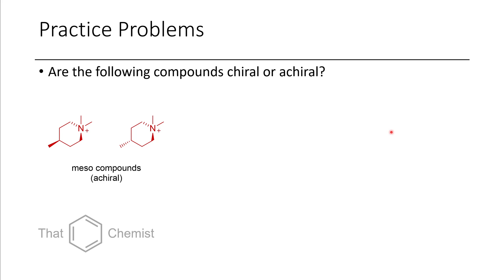I wanted you to decide whether several compounds were chiral or achiral. In this first example we have a quaternary ammonium salt. If you rotate this around and get the opposite enantiomer, they're actually the same compound. So these aren't chiral — these are meso compounds, they're the same compound, so they're achiral.